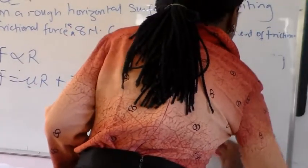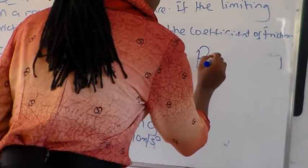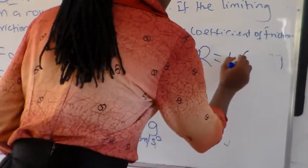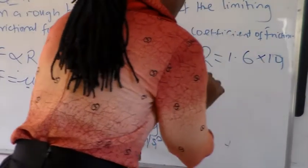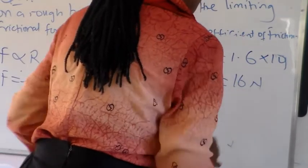Giving approximately as 10 meter per second squared. So, R is now giving us 1.6, which is our mass, times what? 10. So, our R is now giving us 16 Newton.